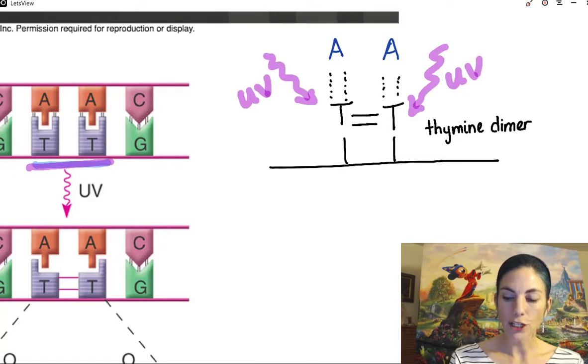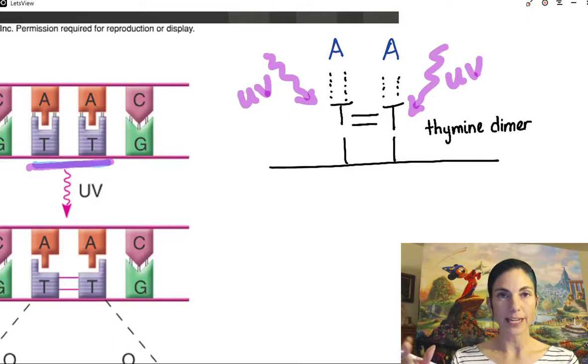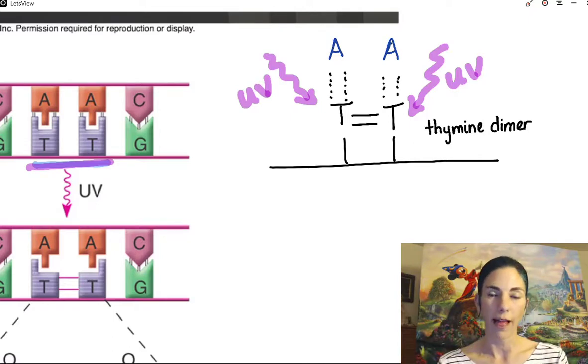So UV irradiation is notorious for causing thymine dimers. So again, this is where two adjacent thymines on the same DNA strand are now sharing four electrons in this double covalent bond.